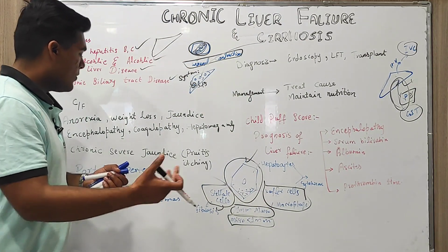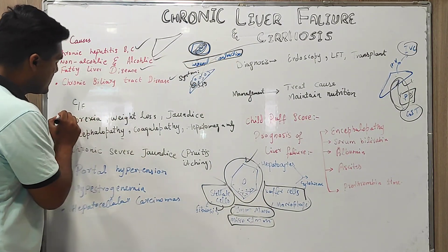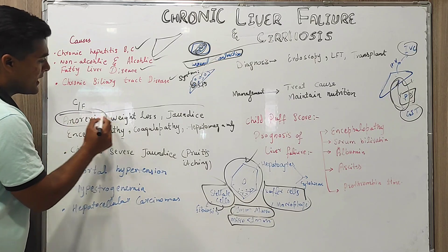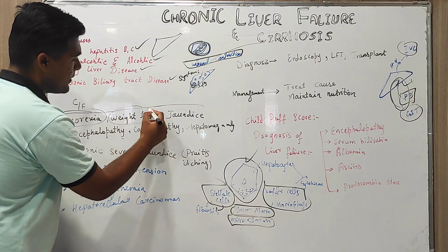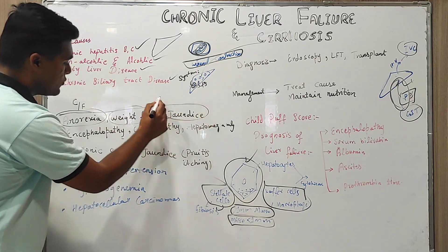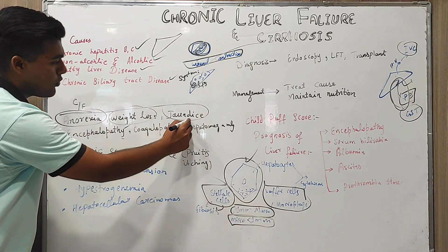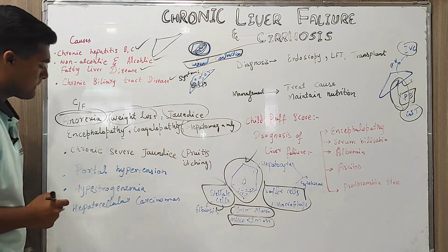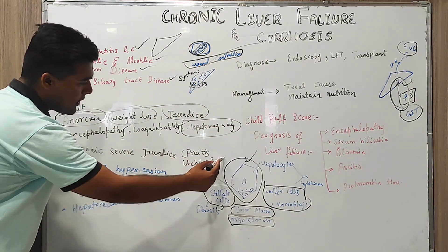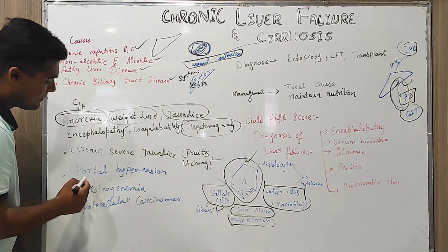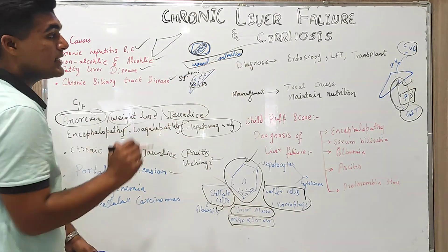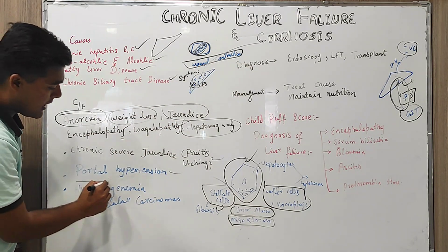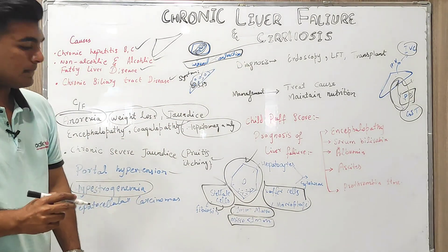Clinical features include most commonly: anorexia, weight loss, jaundice, encephalopathy, coagulopathy, hepatomegaly, and pruritus — itching — as well as portal hypertension, which we discussed in that diagram, and hypo-estrogenemia.